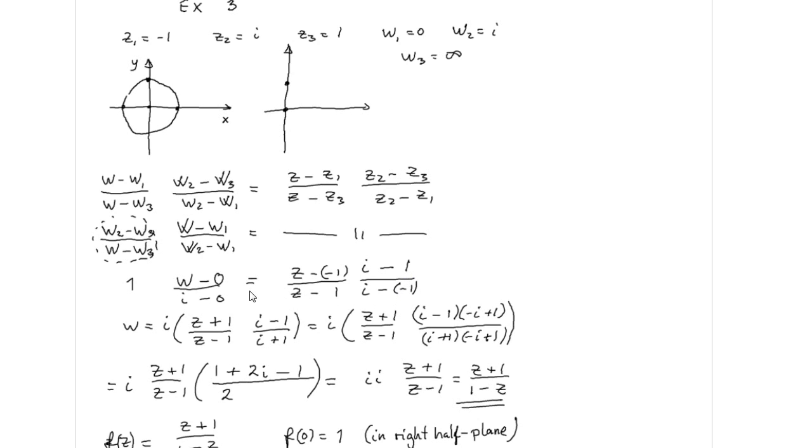So this is a rather easy equation to solve. We are changing this fraction with the fraction we obtain by multiplying the top and bottom with the conjugate of the bottom. And then we obtain this fraction, which is very easy: 1 plus 2i minus 1 over 2.